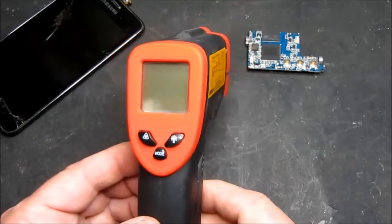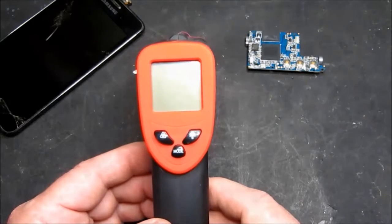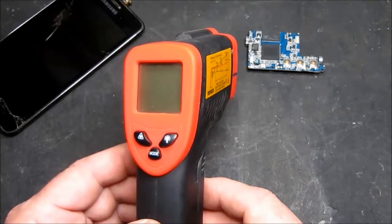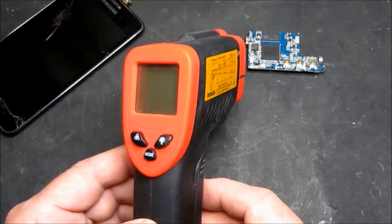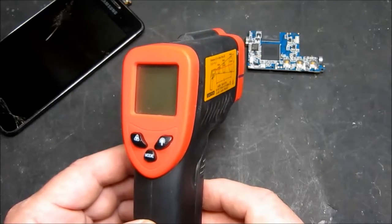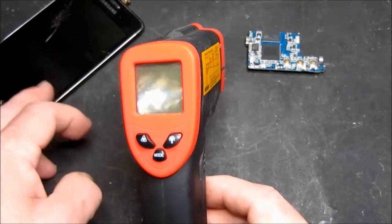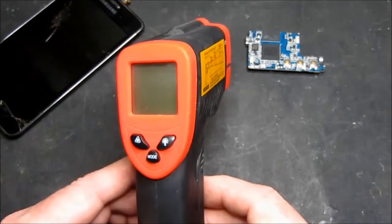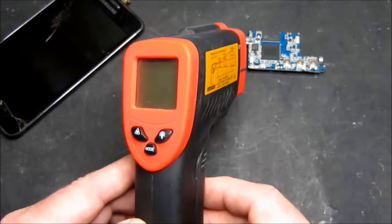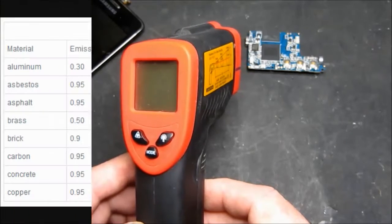Another great feature is that you can set the emissivity. What a great word, emissivity. Now don't get me started on black bodies. Essentially different materials have different radiation characteristics if you like, so we can set that. For example, if we're going to be heating up some glass to change the screen on this phone and we want to read the temperature, we should set the emissivity to 0.85 which is the setting for glass.